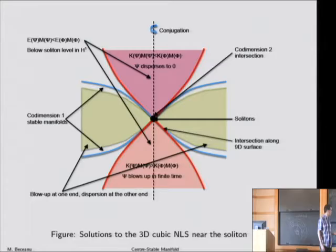Between these two generic behaviors of blowing up and dispersion, there is a co-dimension one interface on which one sees an intermediate behavior.